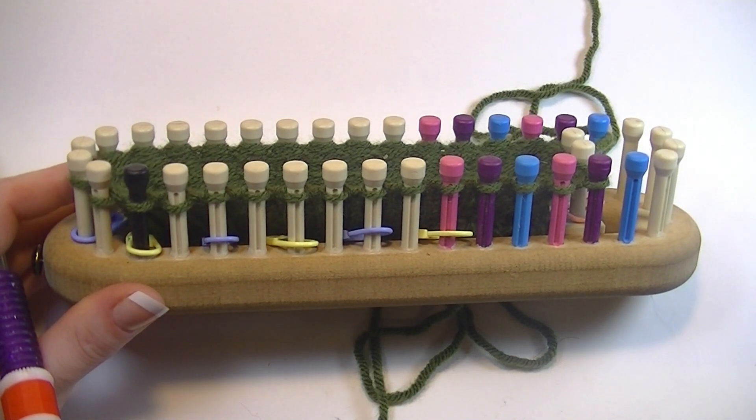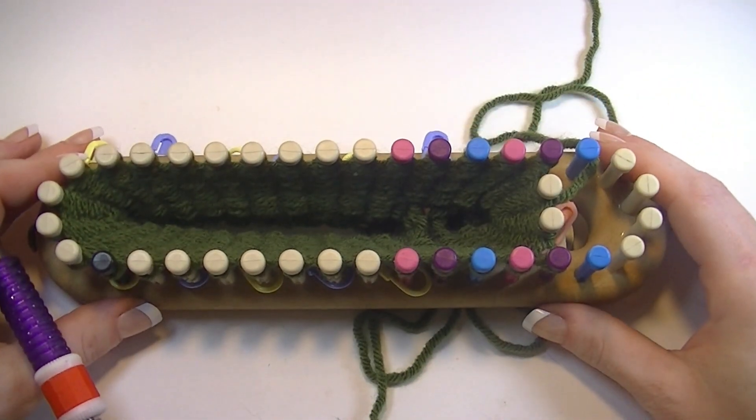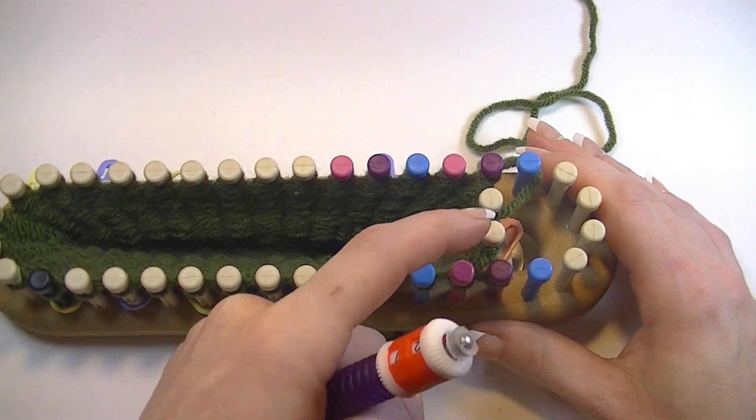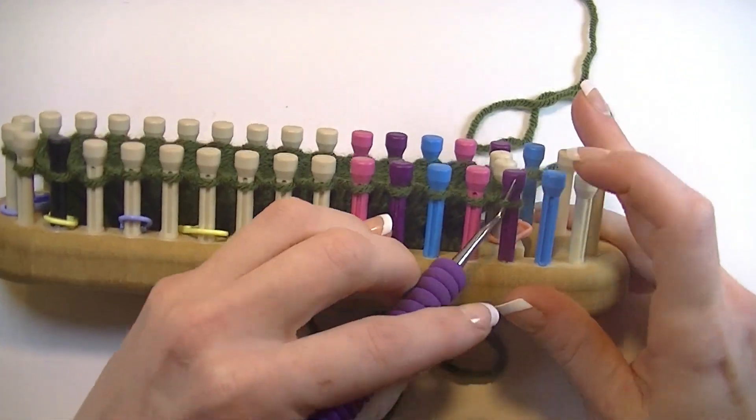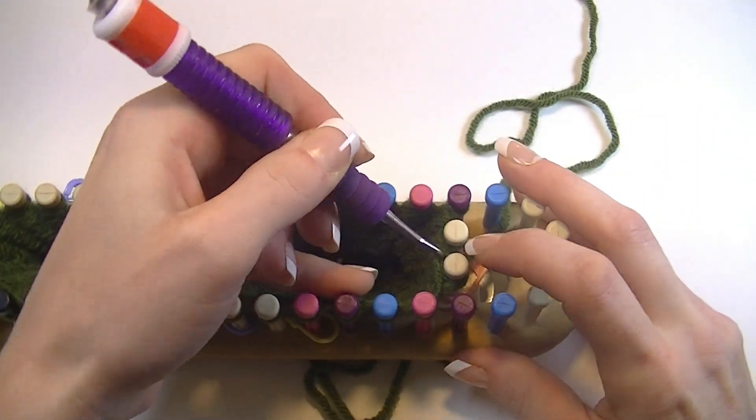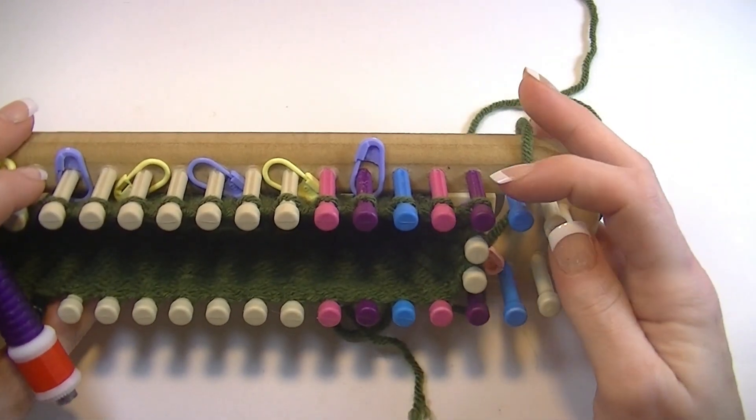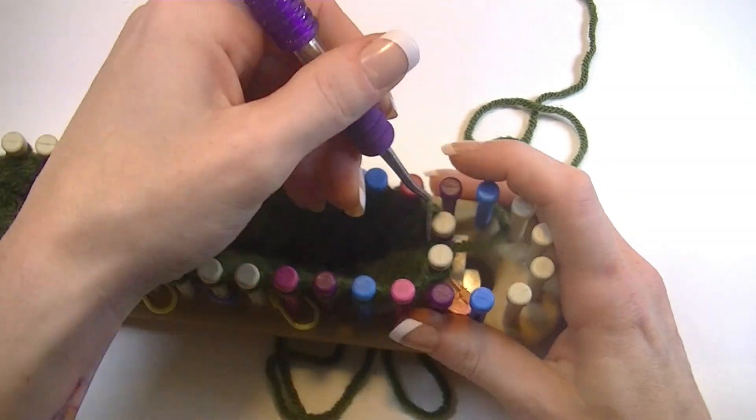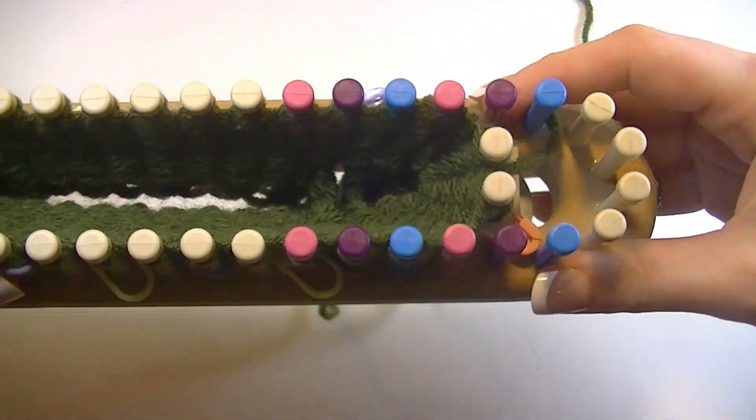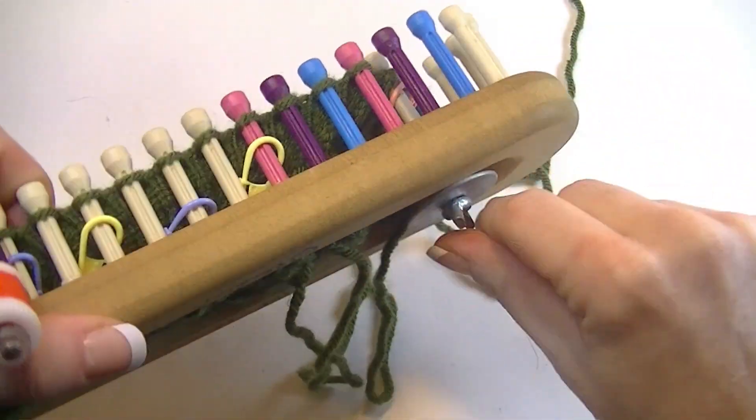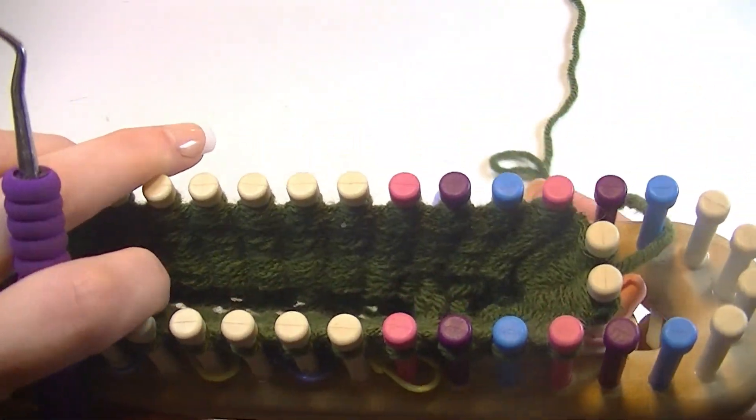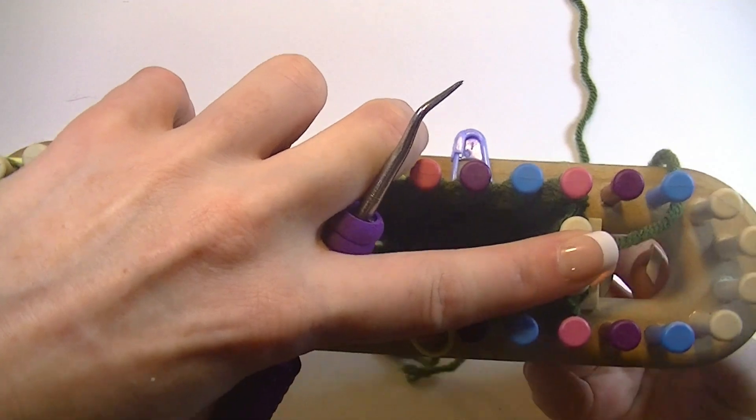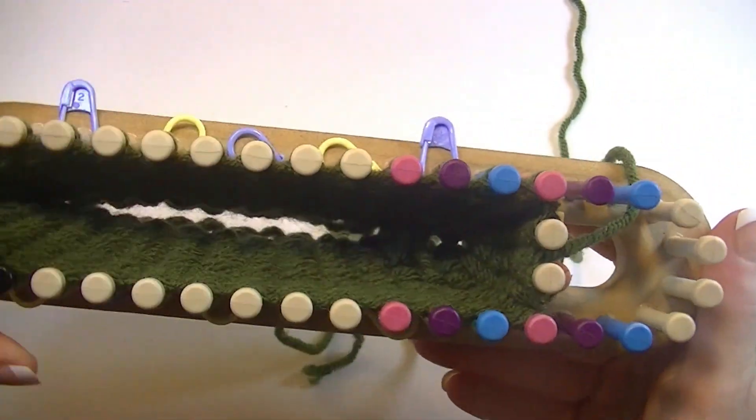To decrease for the wrist, we will move the stitch from peg 13 and place on 0-1, and the stitch from peg 20 and place on peg 0-2. Now we loosen this up just enough to move it and you are going to move it down in between the next set of pegs that have stitches on them, which would be peg 12 and 21.